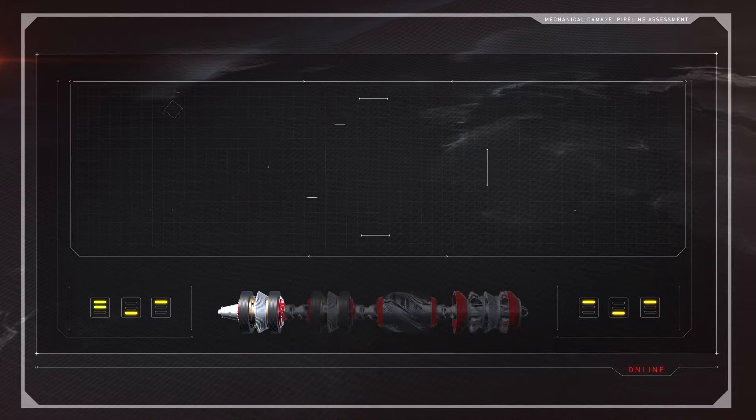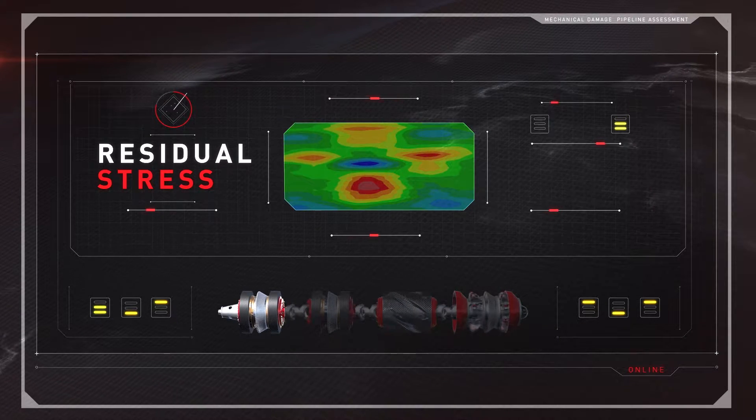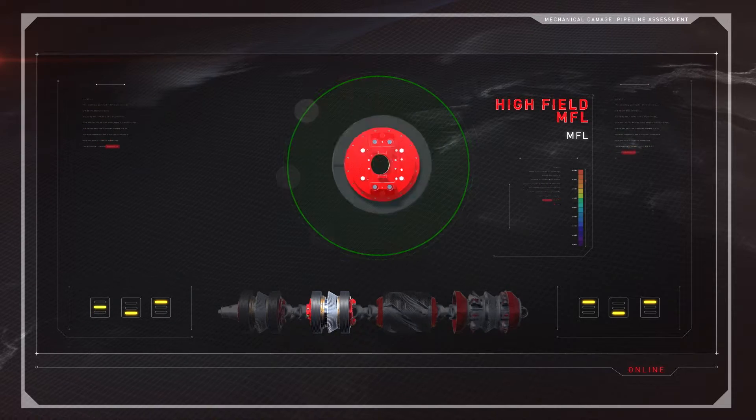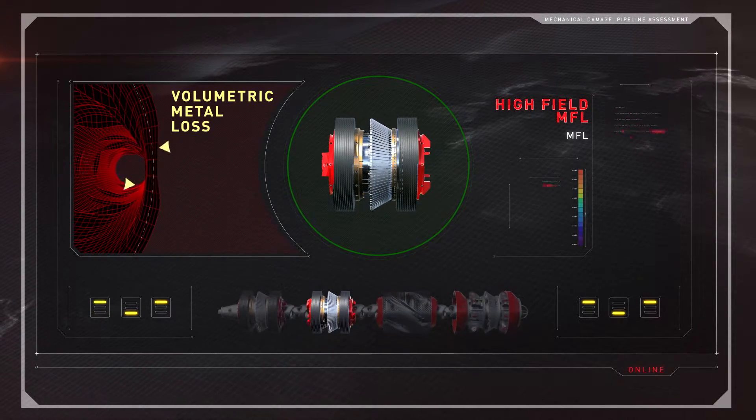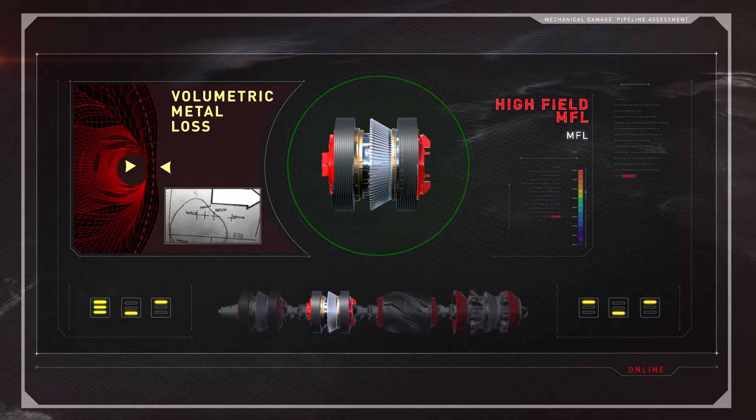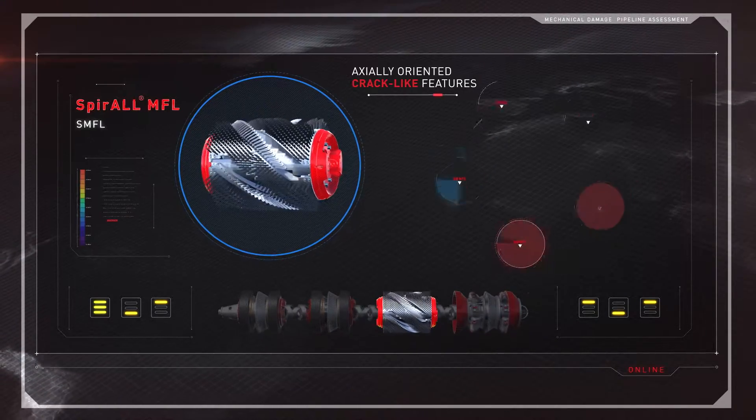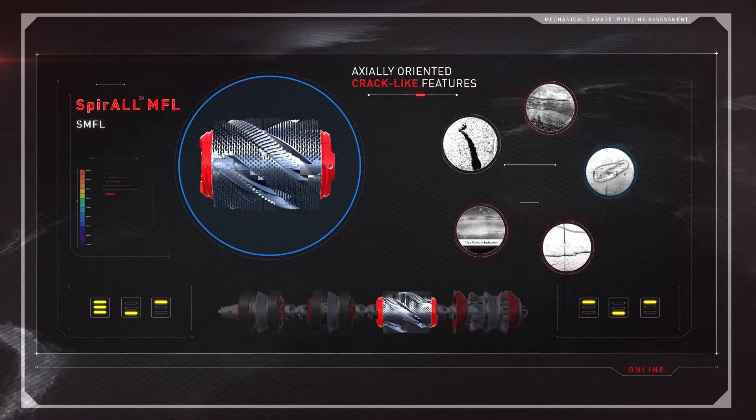For example, as well as residual stresses associated with dent re-rounding. High resolution magnetic flux leakage locates volumetric metal loss, including within a dent region. Spiral MFL detects axially oriented crack-like features such as hook cracks and lack of fusion.